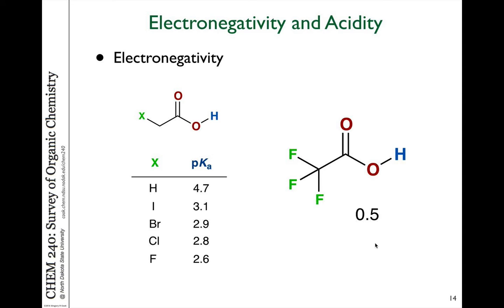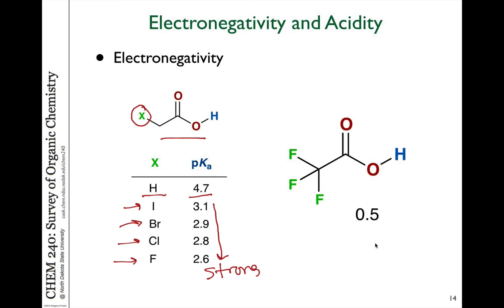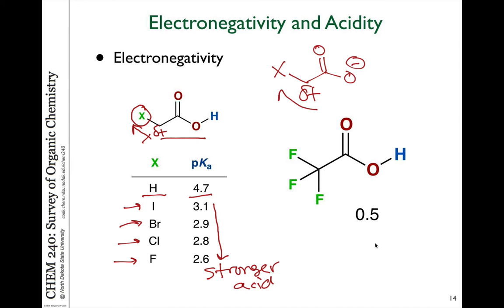Electronegativity also has an impact through more than just one bond — not just the bond directly to the hydrogen being given up, but further away as well. For example, looking at acetic acid with various substitutions, the acid strength changes depending on what the group X is. If X is hydrogen, the pKa is 4.7. As you place more and more electronegative atoms there, acid strength increases because that electronegative atom polarizes the bond, putting a partial positive charge adjacent to the carboxylate, stabilizing the negative charge on the conjugate base.